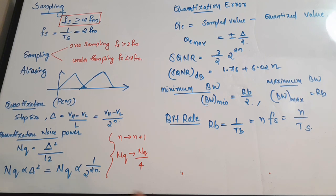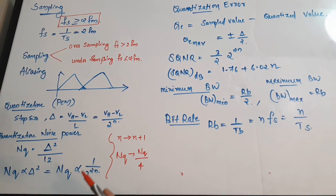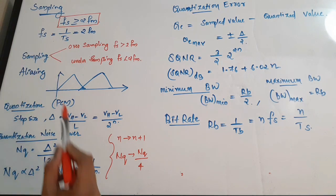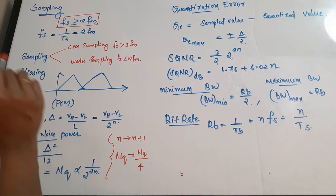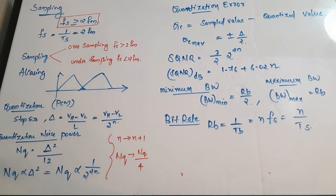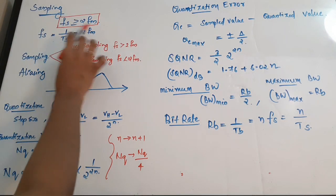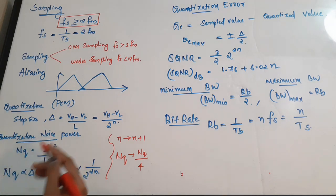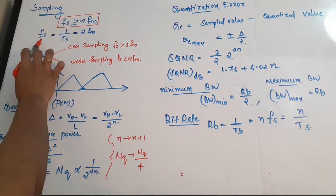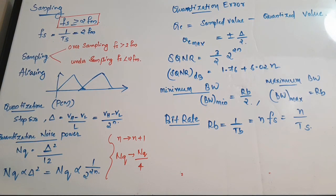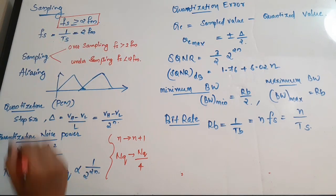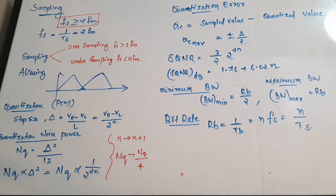The basic thing we do in digital communication is digitizing signals. For digitizing a signal, first we sample it, then quantize it. The sampling theorem states that the sampling frequency Fs must be greater than or equal to twice the maximum frequency: Fs ≥ 2FM. This is the Nyquist criteria. Also, Fs = 1/Ts = 2FM, where Ts is the sampling period.